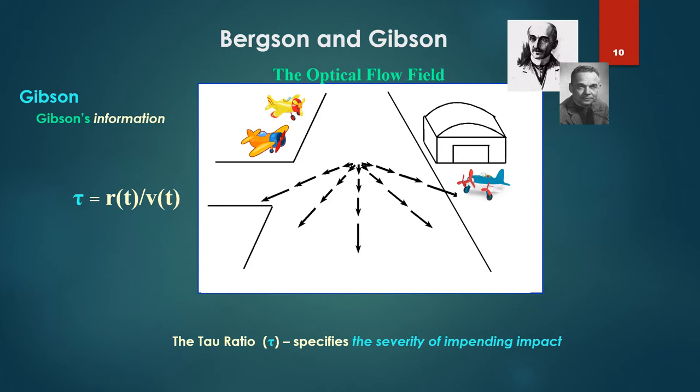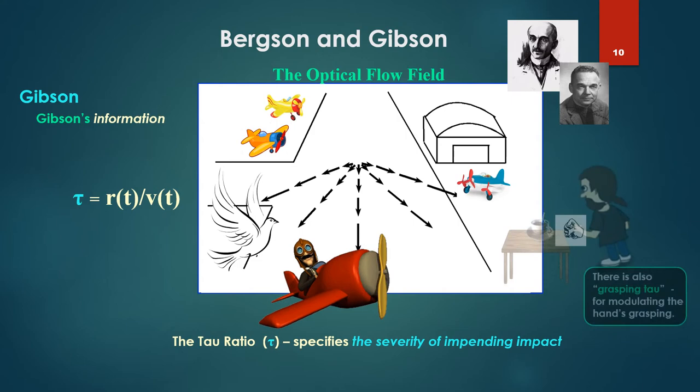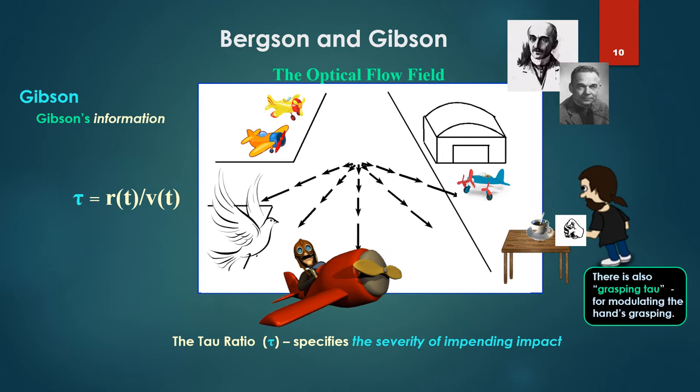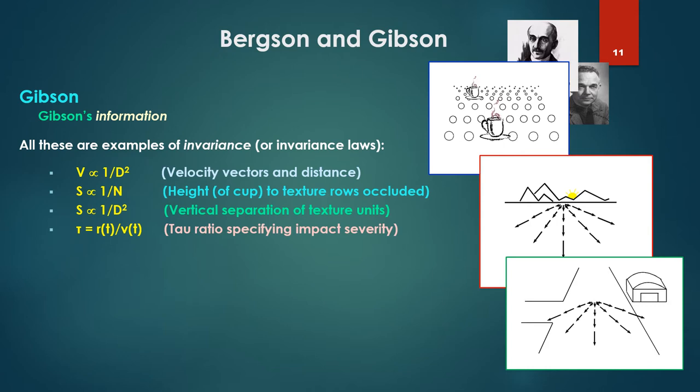Over these flow fields, there's a value that can be defined, termed tau. I won't go into the derivation of it, but suffice to say it exists. The tau ratio specifies the severity of impending impact. If you're a bird and you're landing on our little airfield there, you're using this value - your action systems are using it to control the hardness or softness of the landing. Or similarly for a pilot, values critically in controlling action. There's actually also a form of this called grasping tau for modulating the hand's grasping, say, the coffee cup. Again, the severity of impacting the coffee cup.